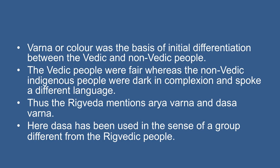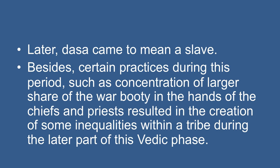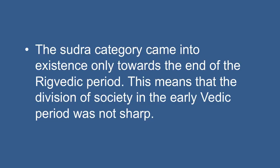The Rig Vedic society was simple and largely egalitarian. There was no caste division — occupation was not based on birth, and members of a family could adopt different occupations. Varna or color was the basis of initial differentiation between the Vedic and non-Vedic people: the Vedic people were fair whereas the non-Vedic indigenous people were dark in complexion and spoke a different language. Thus, the Rig Veda mentioned Arya Varna and Dasa Varna. Later, Dasa came to mean a slave. The Sudra category came into existence only towards the end of the Rig Vedic period, meaning that division of society in the early Vedic period was not sharp.